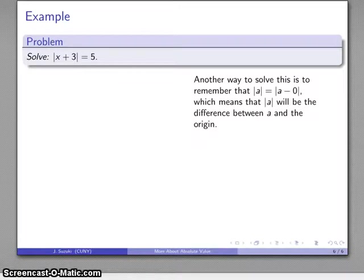We might try and find a way of solving this problem directly without having to convert the plus an amount into minus the additive inverse. A convenient way of thinking about this is to remember that the absolute value of a, well, a itself is the same as a minus 0. So the absolute value of a is the difference between a and 0, wherever a is and the origin.